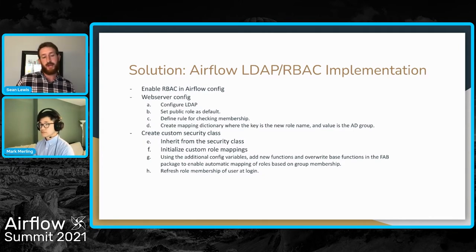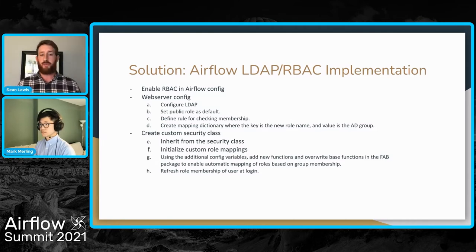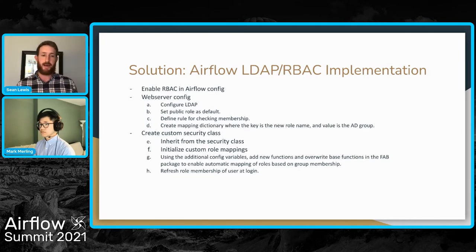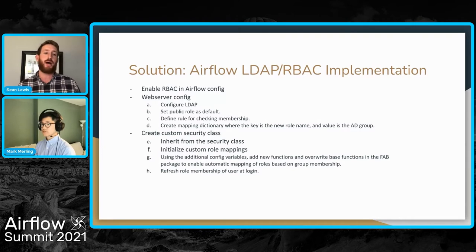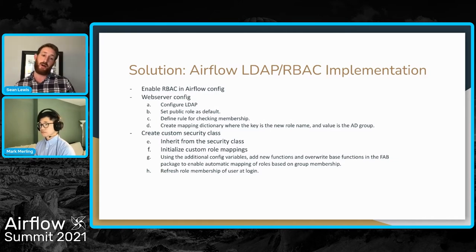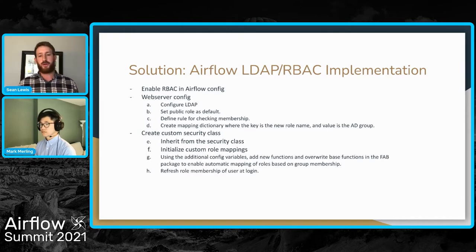We made some configuration changes in the web server config Python file — first to configure the LDAP variable to match how your organization has LDAP set up. Next, we want to set the public role as the default role, essentially to prevent people from seeing other information and DAGs in the UI right off the bat. Lastly, you need to set variables to understand what specific groups to look for in your LDAP configuration, and then create a mapping dictionary associating the Airflow role with a specific Active Directory group.